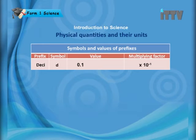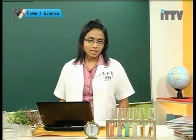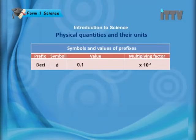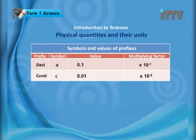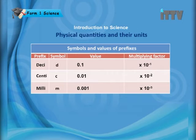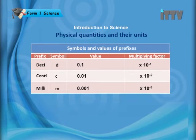Now for the smaller unit prefixes. Desi (symbol d) has a value of 0.1, with a multiplying factor of 10 to the power of negative 1. Centi (symbol c) has a value of 0.01 and factor of 10 to the power of negative 2. Milli (symbol m) has a value of 0.001 and factor of 10 to the power of negative 3 — the number of zeros after the decimal point determines the power.